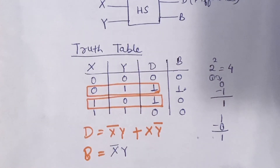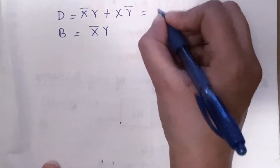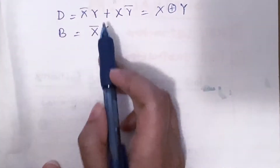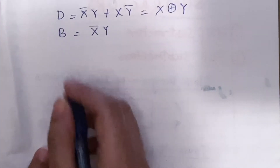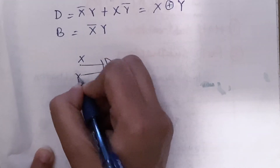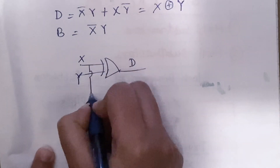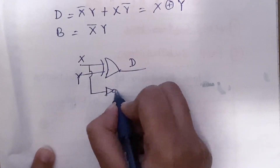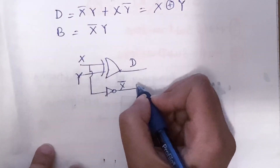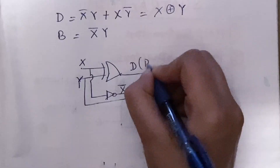Now using these Boolean expressions, we will build the circuit for the half subtractor using logic gates. The expression for D (X-bar·Y + X·Y-bar) is equivalent to X XOR Y. So D is implemented using an XOR gate between inputs X and Y. For the borrow B = X-bar·Y, we use a NOT gate on X to get X-complement, then feed it along with Y into an AND gate to get B.